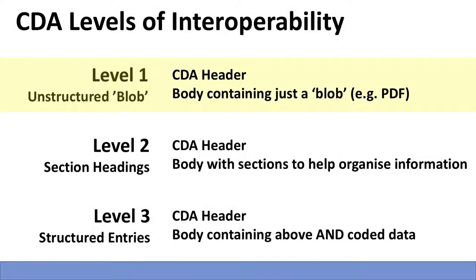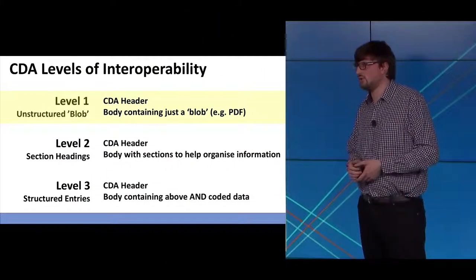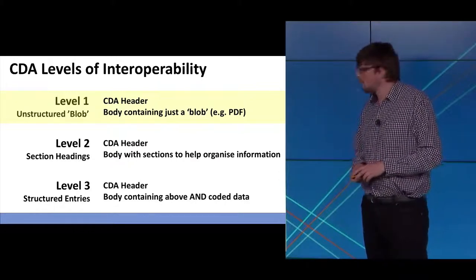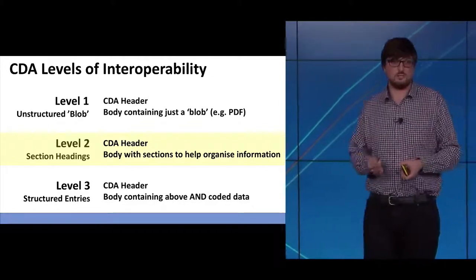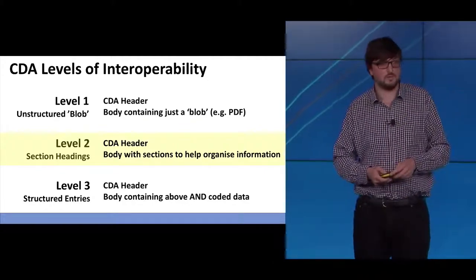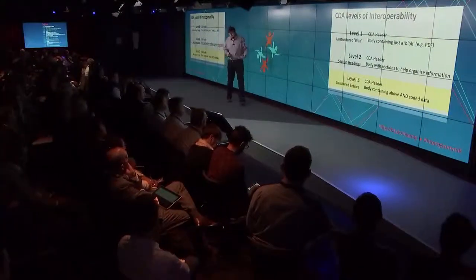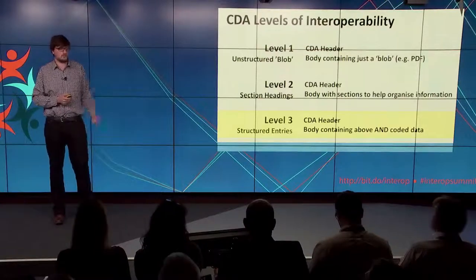CDA had three levels of interoperability defined, recognising that different systems have different levels of capability. All three recognise that you have a header in the message. At level one, the body contains just a blob — think of it as a file attachment for an email, maybe a PDF or an image. Level two adds structure, organising the body into sections with headings to group information. Level three expands on that further, making use of information models and coded data to give properly structured meaning — it's the hardest level to achieve, because it depends on all the pre-agreed data models.